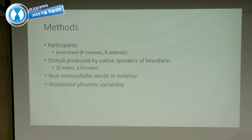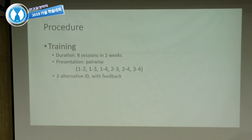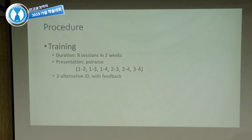We had American students in their first semester of learning Mandarin. Stimuli were produced by two male and two female native speakers. We used monosyllabic words, maximizing phonetic variability across different vowel contexts and onsets. Our procedure was eight training sessions over about two weeks, and training was pairwise on tones — in a given block you would be trained on tone 1 versus tone 2, or tone 3 versus tone 4. On each trial you identified the tone and always received feedback.